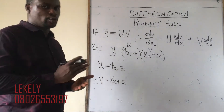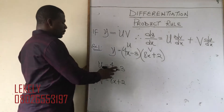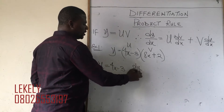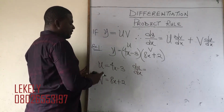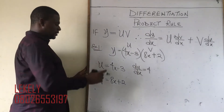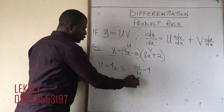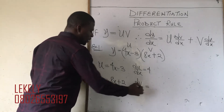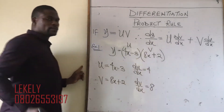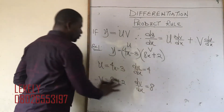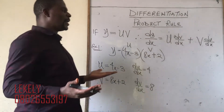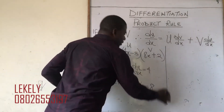Always call the first bracket u and the second one v. Now I have u and x, so I look for du/dx. If I differentiate 4x it gives me 4; differentiating the constant 3 gives zero. Then I have v and x, so I look for dv/dx. Differentiating 8x gives 8; differentiating 2 gives zero. These are the four things you need.